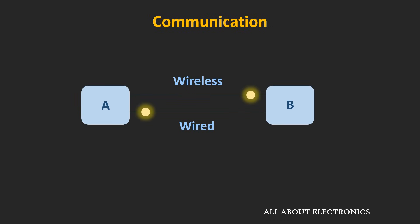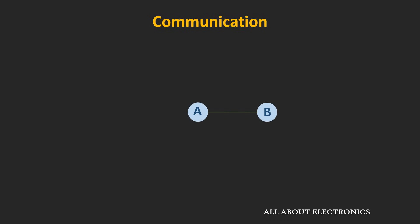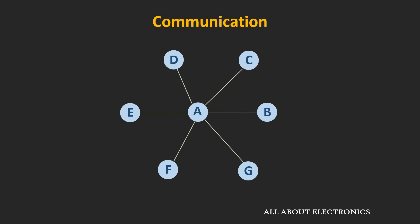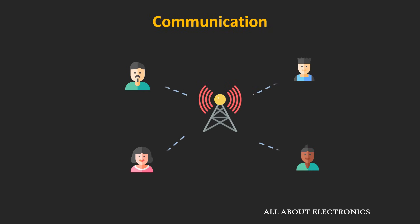Communication could be point-to-point, point-to-multipoint, or even in a network. Many times, communication could be broadcast as well, where from one station the information is broadcasted. One such example is FM transmission, where a radio station broadcasts information at a particular frequency.